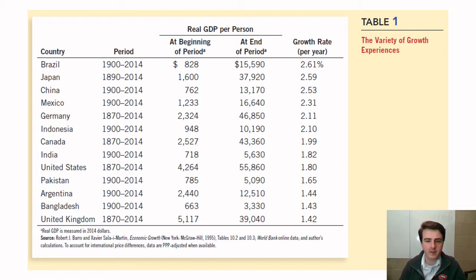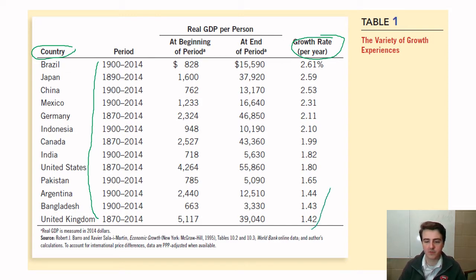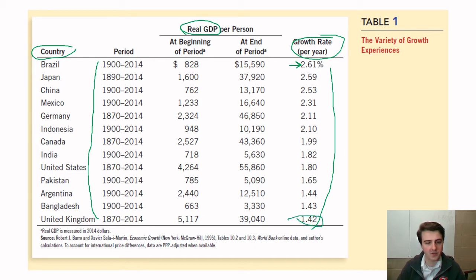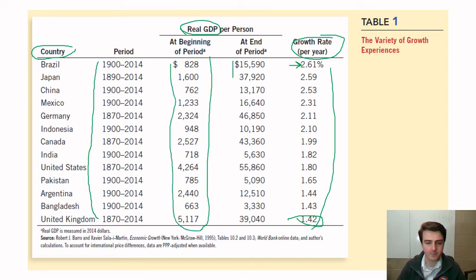We can see different growth rates per year for different countries across roughly the same period — the late 1800s and early 1900s up to the 2010s. All of these countries grew at different rates over this time. We see Brazil grew 2.6% on average per year in terms of real GDP. Some countries grew a little slower, like the UK growing at 1.4% across this period. At all of these periods, GDP per person went up an awful lot — from hundreds or low thousands per person to tens of thousands or higher.